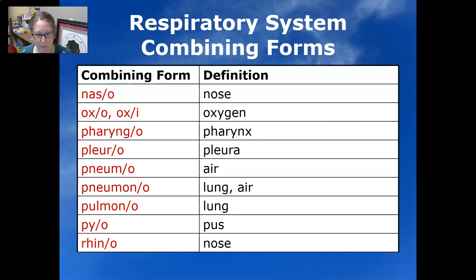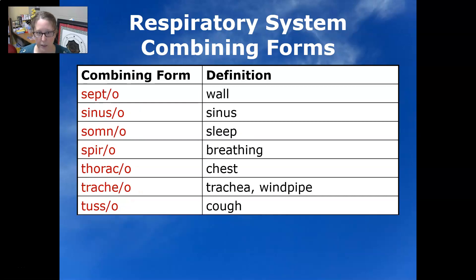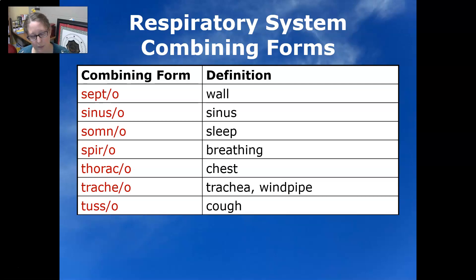Pio means pus. Rhino means nose. Septo means wall. Sinuso means sinus. Somno means sleep. Spiro means breathing. Thoraco means chest. Tracheo is trachea or the windpipe. Tusso is cough — think like Robitussin, a cough medicine.